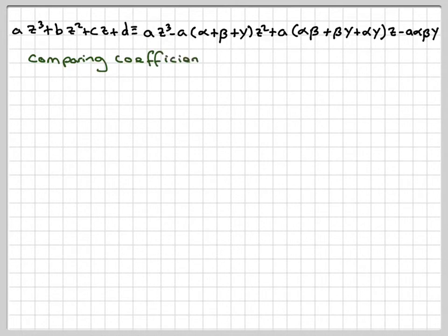So if we now compare coefficients of z², b would have to be equal to minus a times alpha plus beta plus gamma. And that would give that the sum of the roots, alpha plus beta plus gamma, is equal to minus b over a. This is called the sum of the roots.